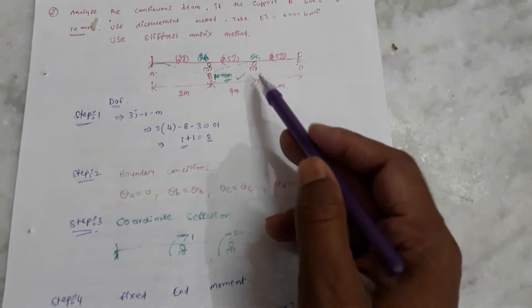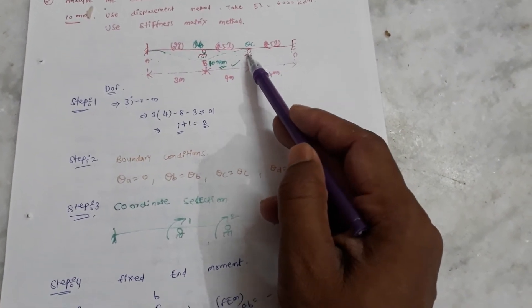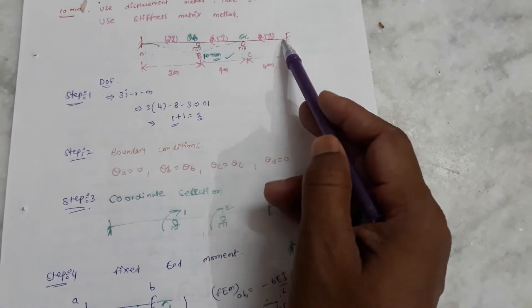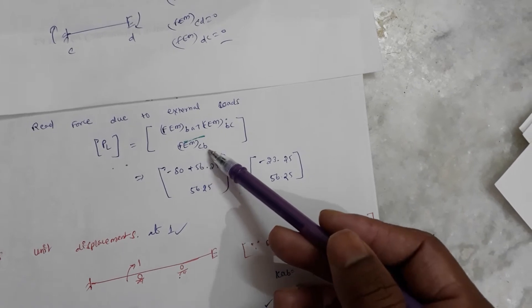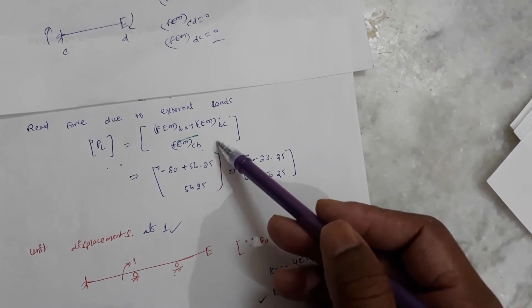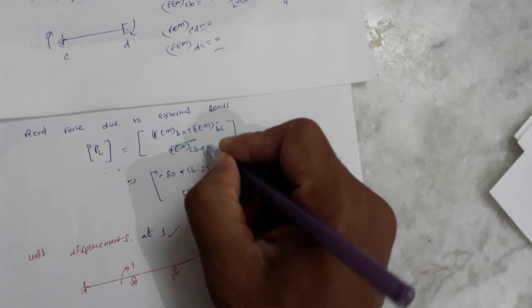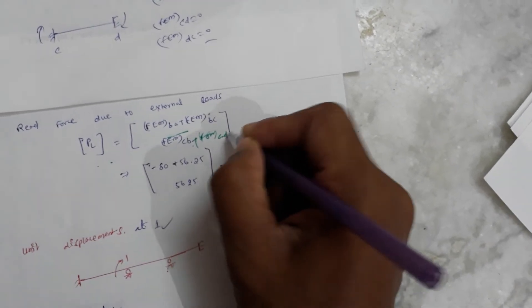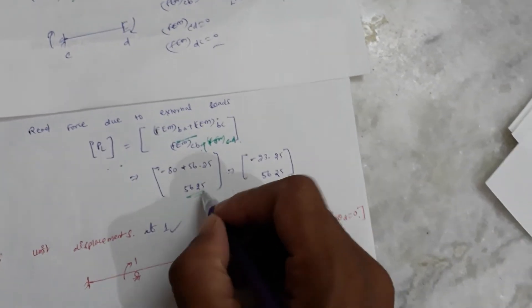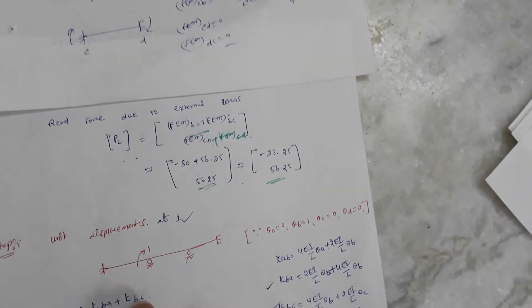At coordinate 2, the load condition involves the fixed-end moment of C-B and the fixed-end moment of C-D. Since C-D has no settlement, its fixed-end moment is zero. After assembling all contributions, we obtain the real force vector P_L.